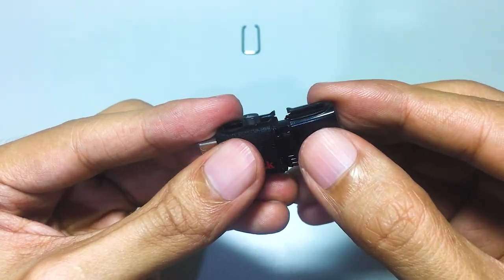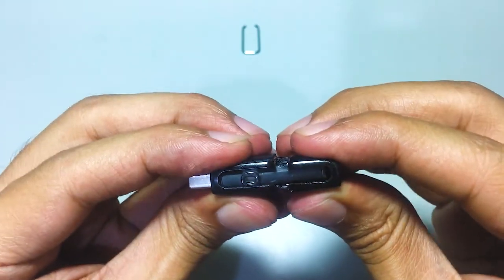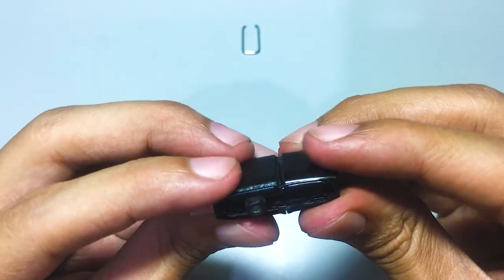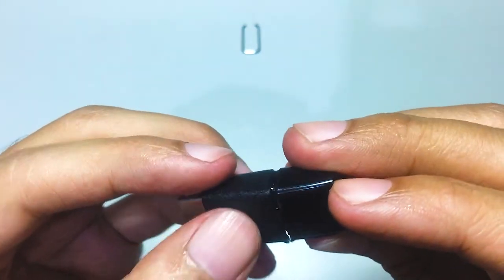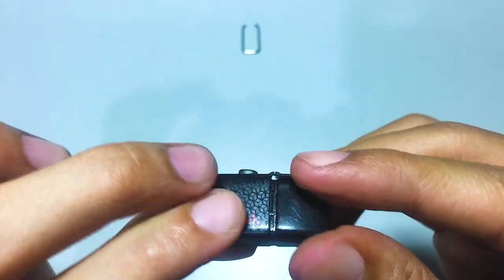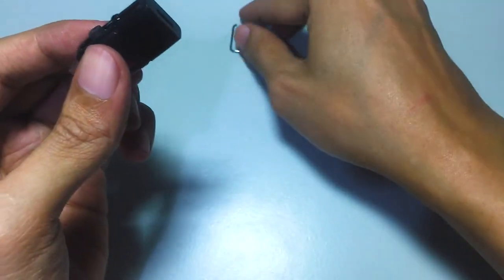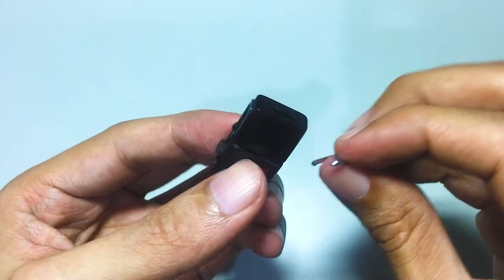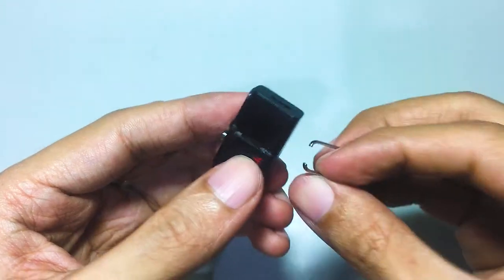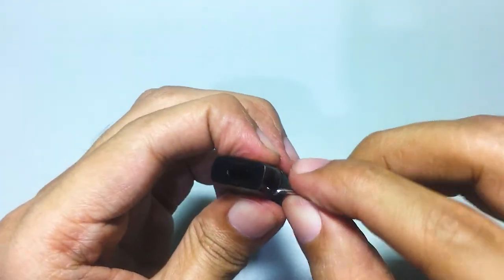When we hear the snap sound, that's where we know it's tightened up pretty good. And I'm just wiggling it for good measure. Then put the metal lock back and push it until we hear the snap sound again.